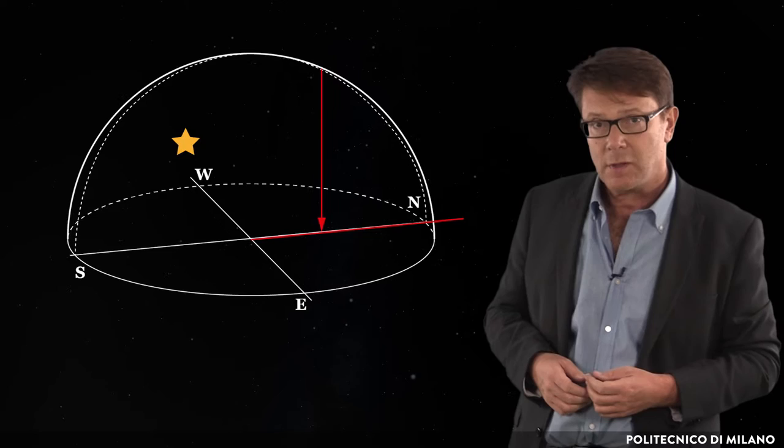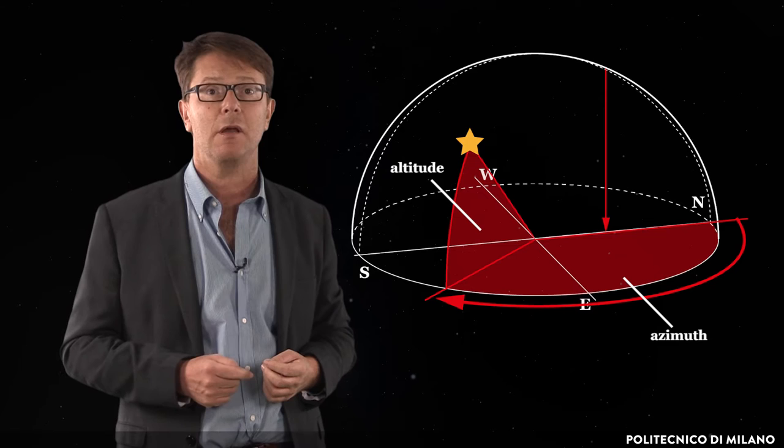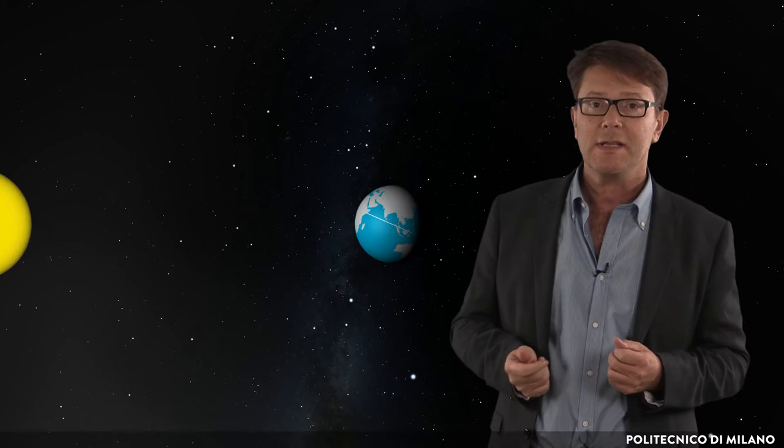The azimuth of a point is the bearing of the point from the observer, measured clockwise round from the geographical north. The altitude of a point is the angle it subtends above the horizontal, as viewed from the observer's position. The first object we want to localize in the sky is, of course, our star, the Sun.